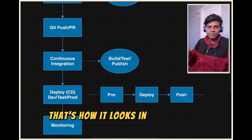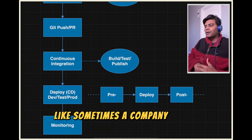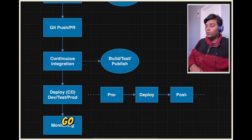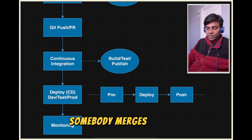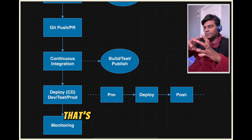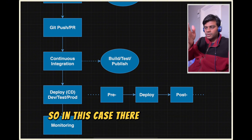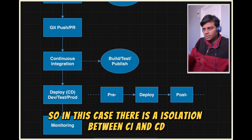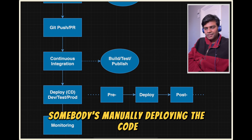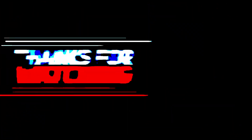Sometimes a company might choose to deploy the code as soon as somebody merges it — that's basically continuous deployment. In this case there is a separation between CI and CD, where someone is manually deploying the code. That's how software gets developed.